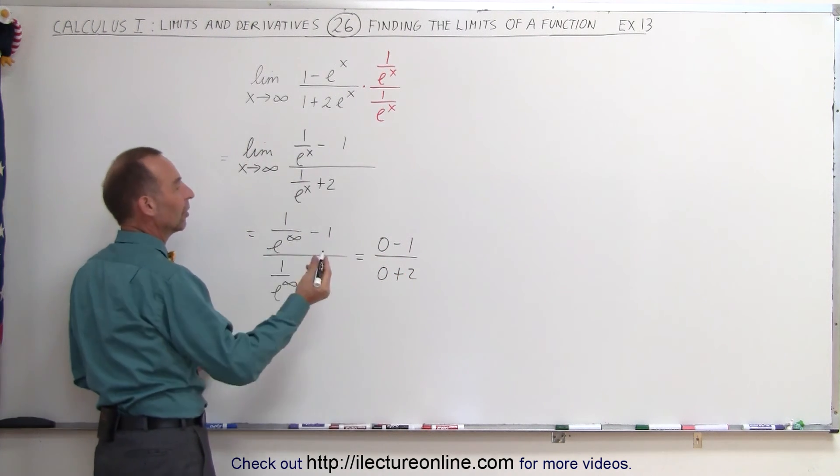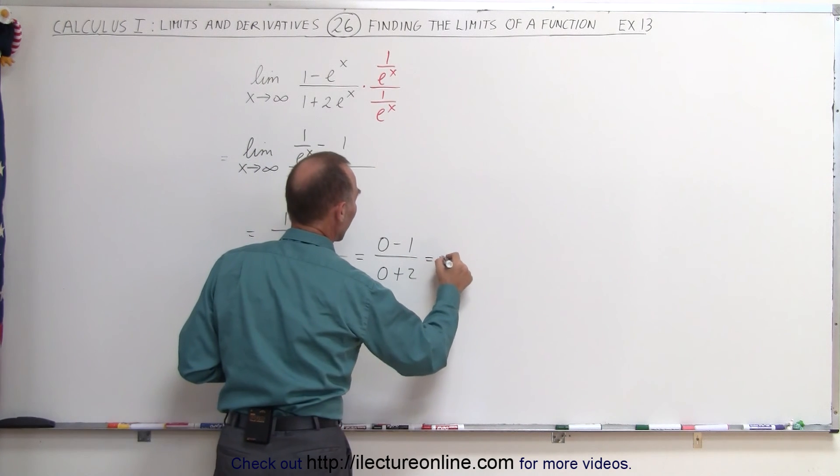For the same reason in the denominator, we get the same result. The zeros drop out. So this is equal to minus 1 over 2.